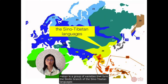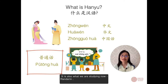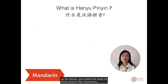Hanyu is a group of varieties that form the Sinitic branch of the Sino-Tibetan languages, spoken by the ethnic Han majority and many ethnic minority groups of greater China. The common language spoken by the modern Han people is called Putonghua — it is the official language of China, also known as Mandarin. Hanyu includes standard Chinese and its dialects.